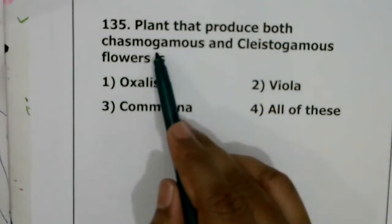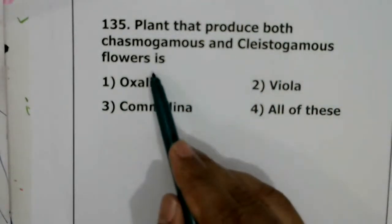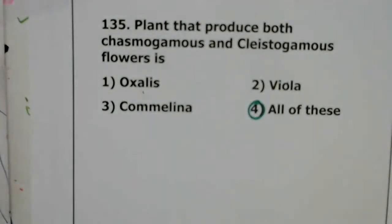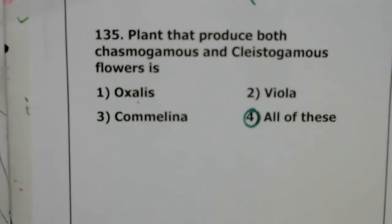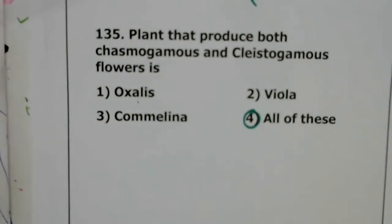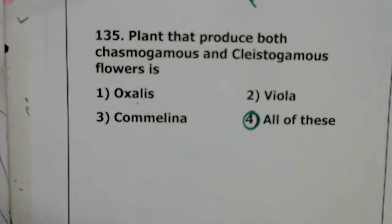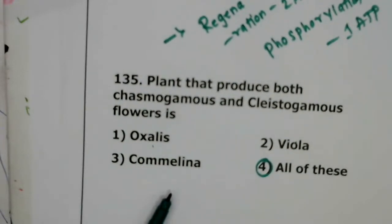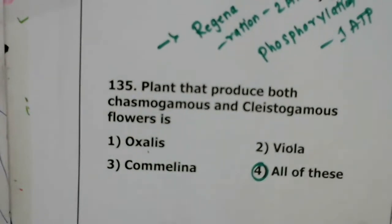Question 135: plants that produce both chasmogamous and cleistogamous flowers include Oxalis, Viola, and Commelina — all of these. Regarding the question paper in PDF form — I will ask sir and try to make necessary arrangements. That is all about today's discussion, thanks for joining.